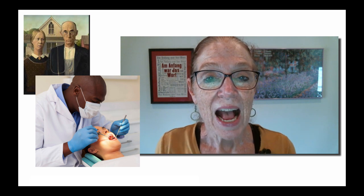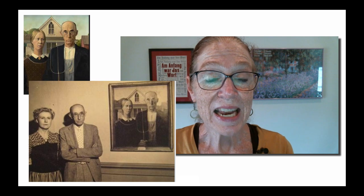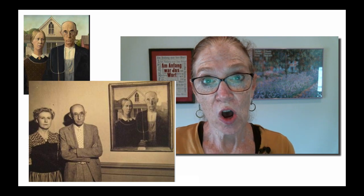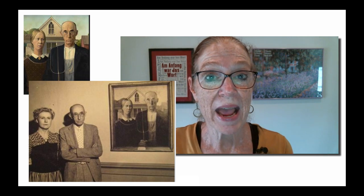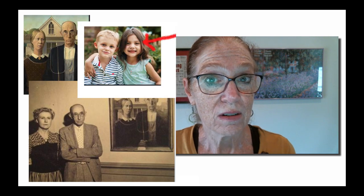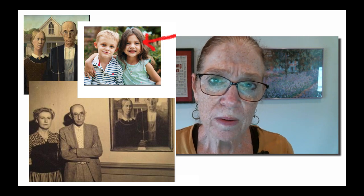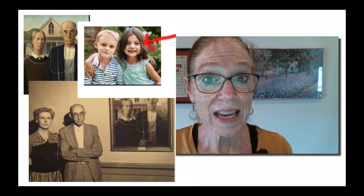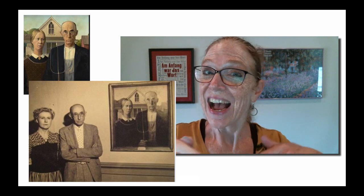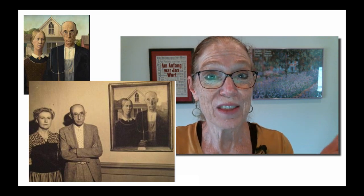He looked for some people to paint with the ordinary white house. He thought of his dentist, the doctor who worked on his teeth. So he asked his dentist, a man aged 62, may I paint you? And so he did. Next, he needed a woman to stand next to the man, so he asked his sister. Grant asked his own sister, can I paint you in my next painting, please? And she said yes. So he painted his dentist and his sister together in front of this ordinary white house.